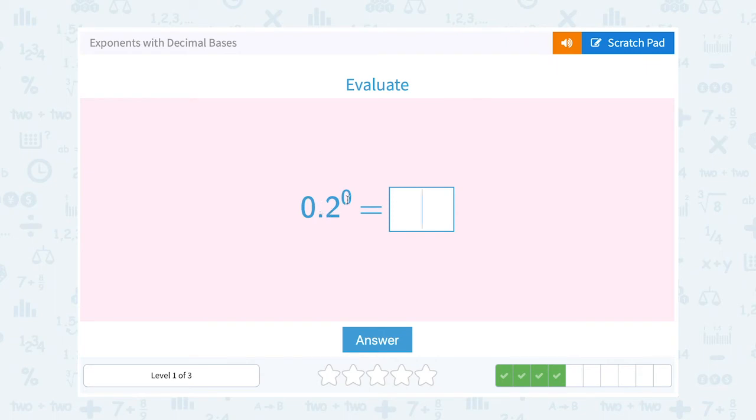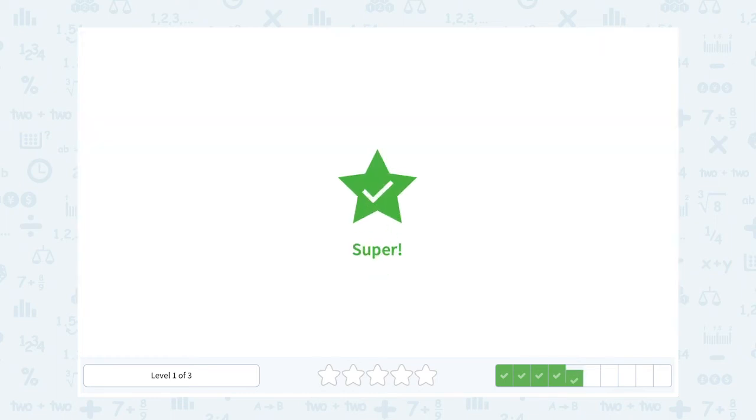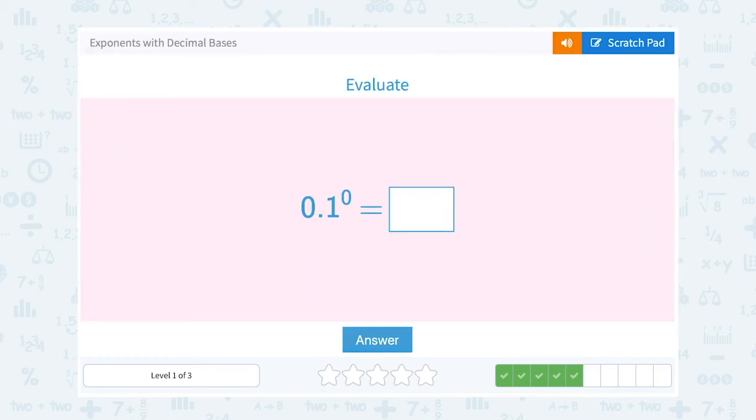0.2 to the 0 power. Well again, anything to the 0 power is 1. 0.1 to the 0 power. Anything to the 0 power is 1 again.